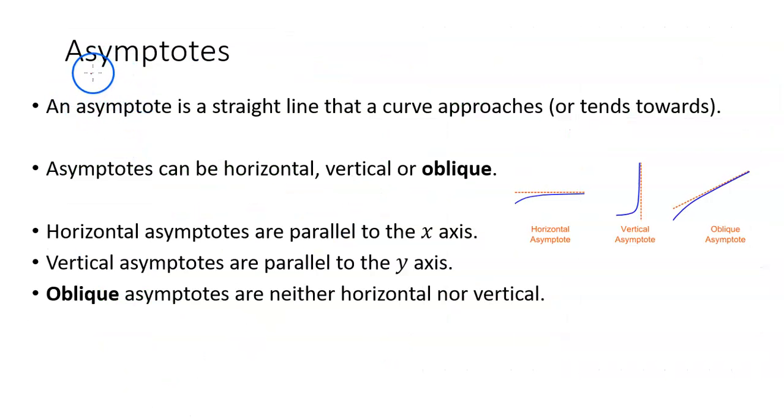Okay, so just to recap, asymptotes. An asymptote is a straight line that the curve approaches or tends towards. Asymptotes can be horizontal, vertical, or oblique. Horizontal asymptotes are parallel to the x-axis, vertical asymptotes are parallel to the y-axis, and oblique asymptotes are neither horizontal nor vertical.